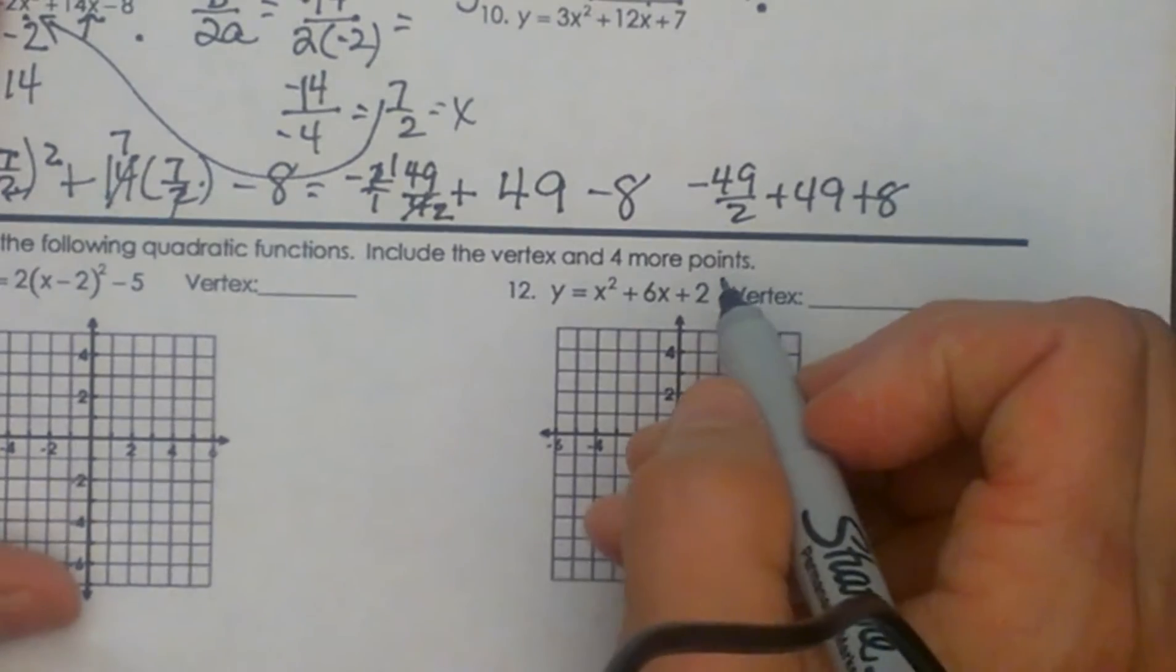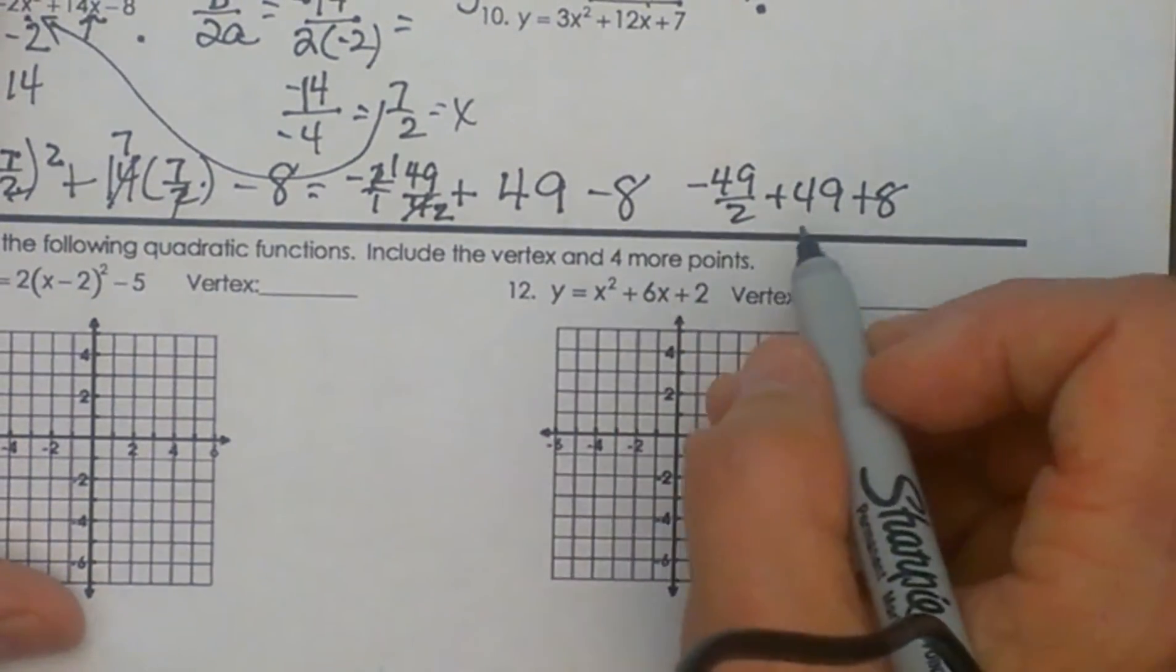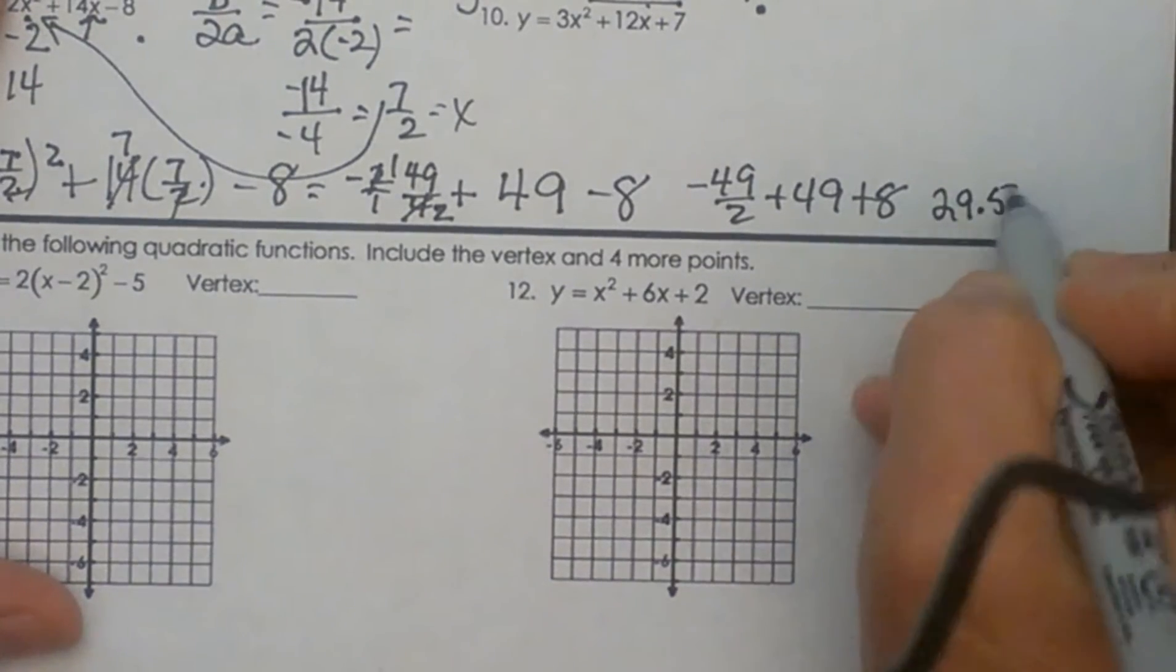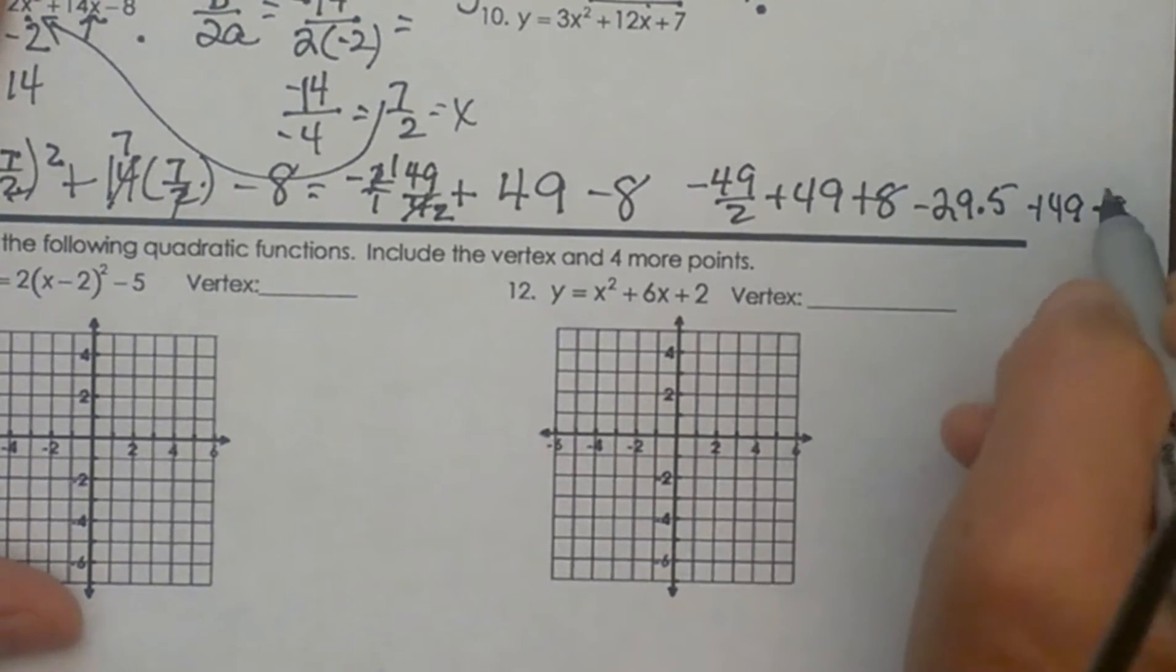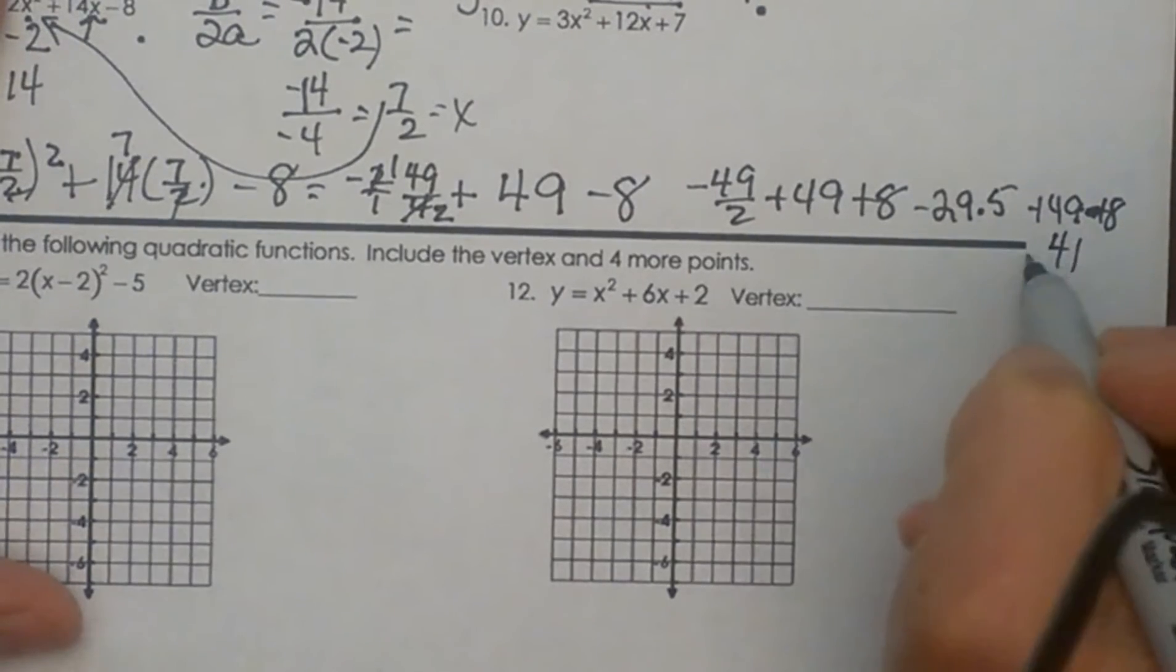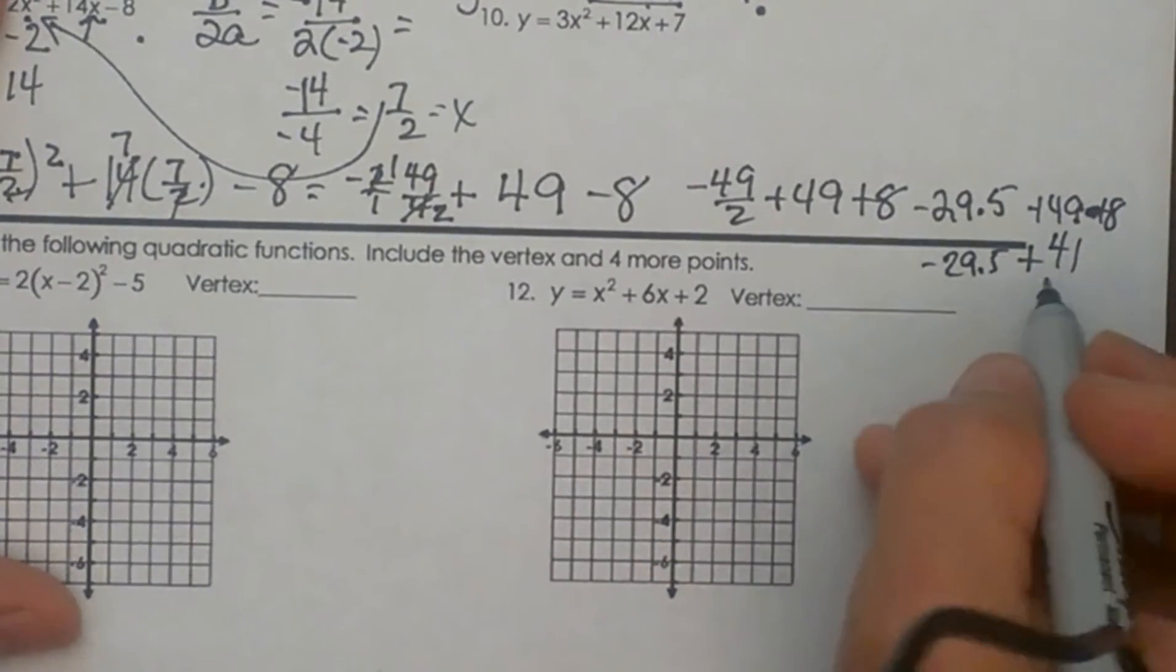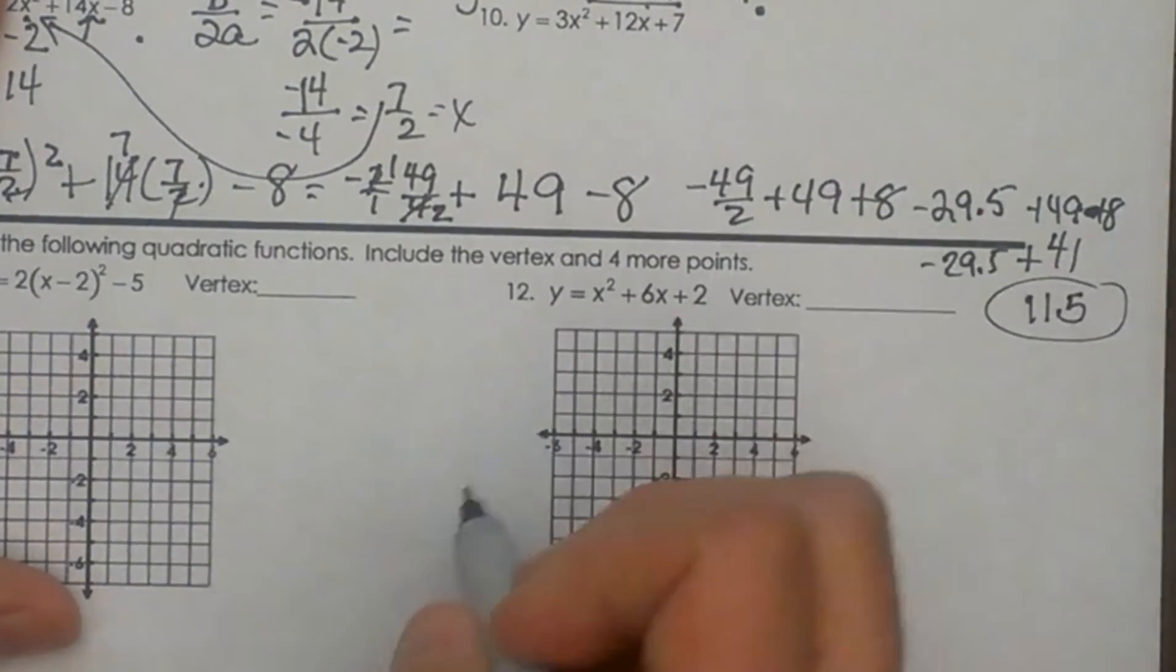Now you can grab your handy dandy calculator or you could have actually put it in back here if you had wanted to. So let's see, what is half of 49? That is going to give me 29 and a half and it is negative plus 49 minus 8, so that is going to give me 41 I am adding in the back. So negative 29 and a half plus 41, that is going to give me 11 and a half, so positive 11 and a half is my y coordinate.